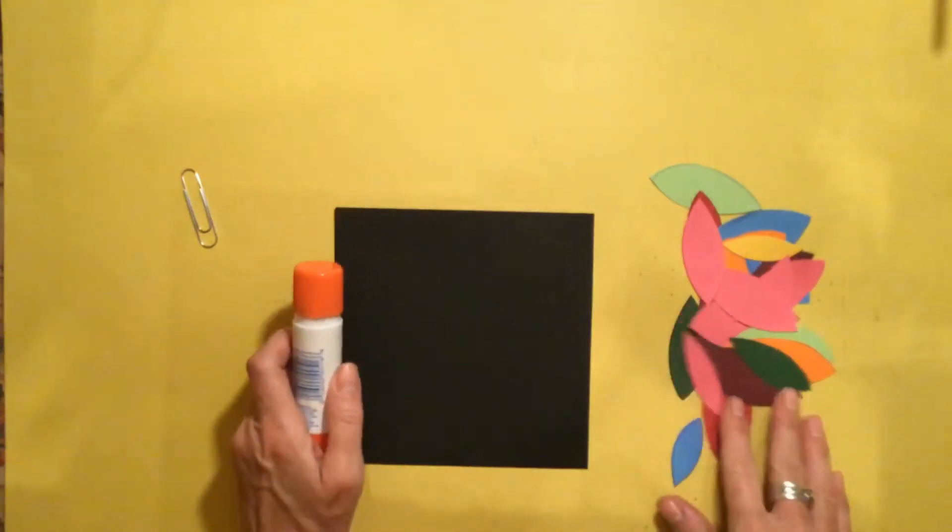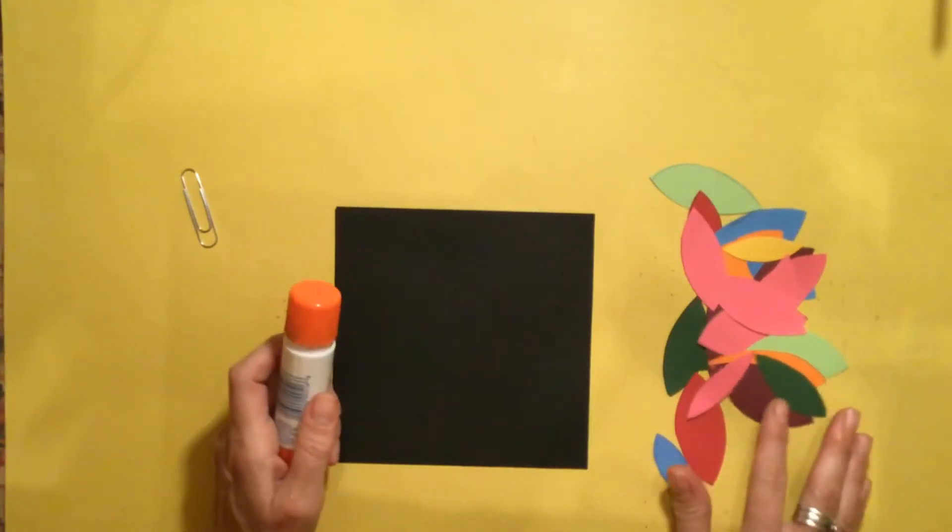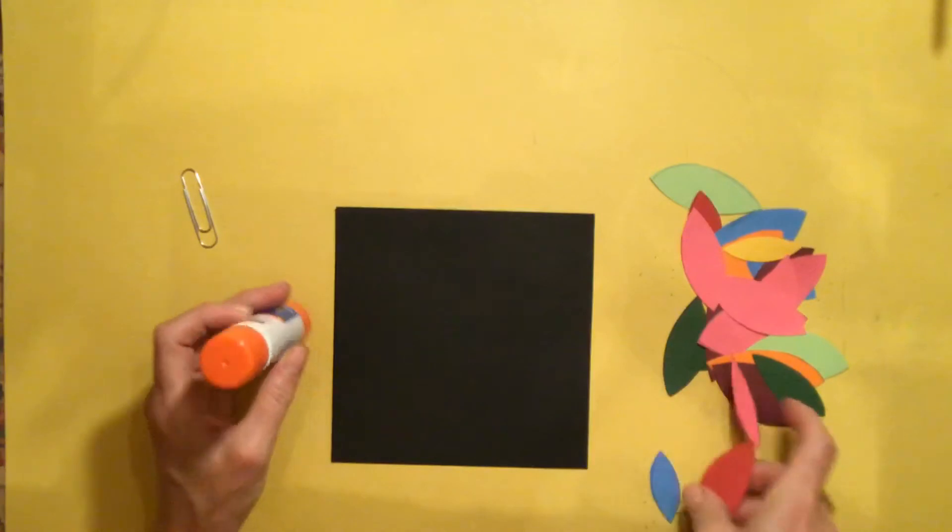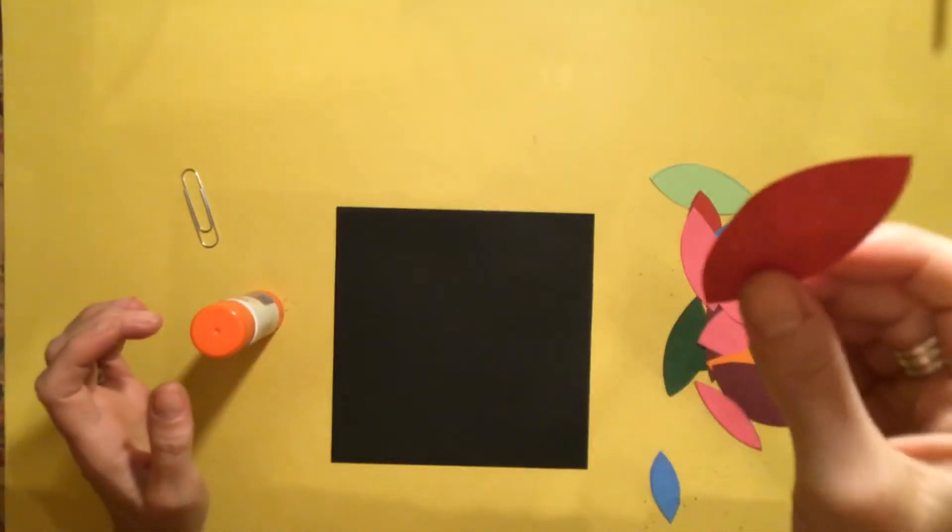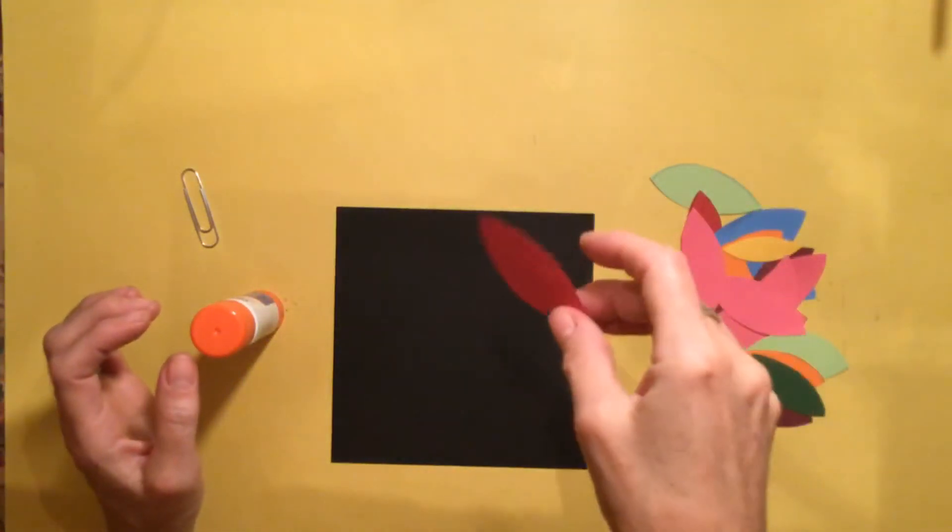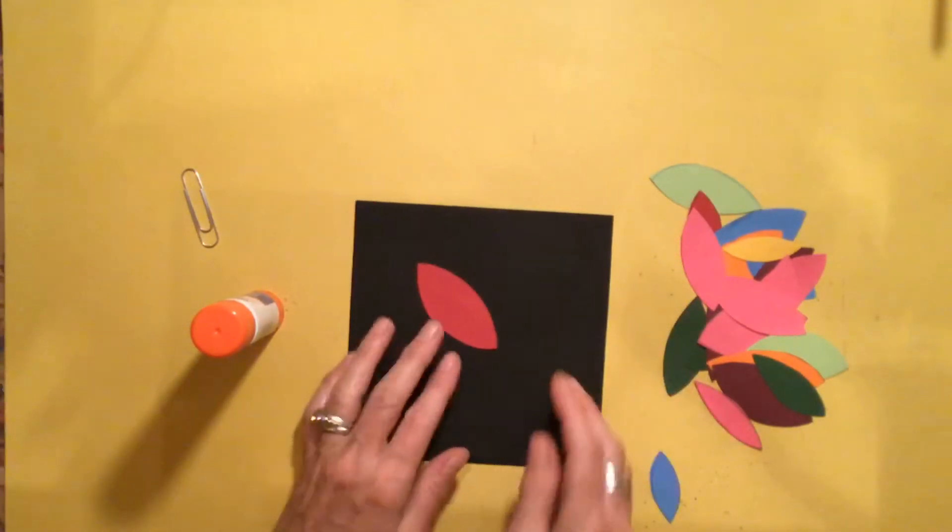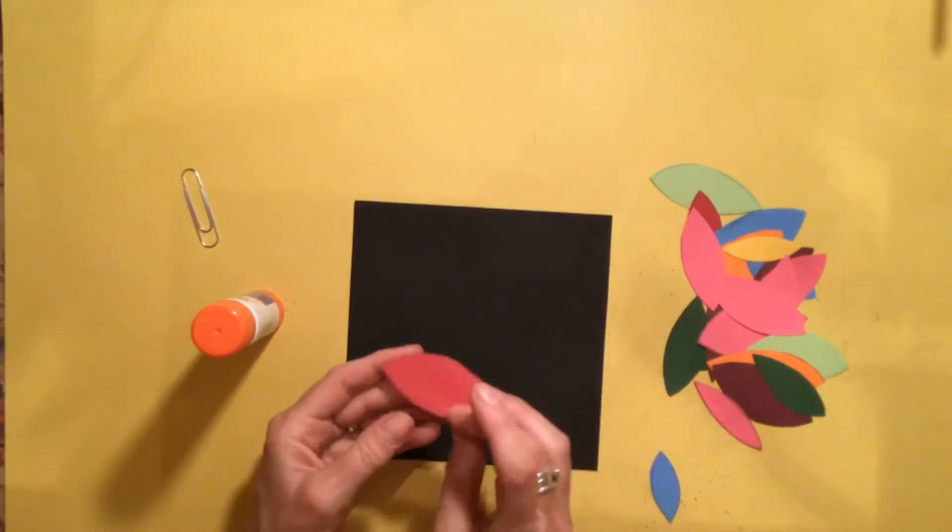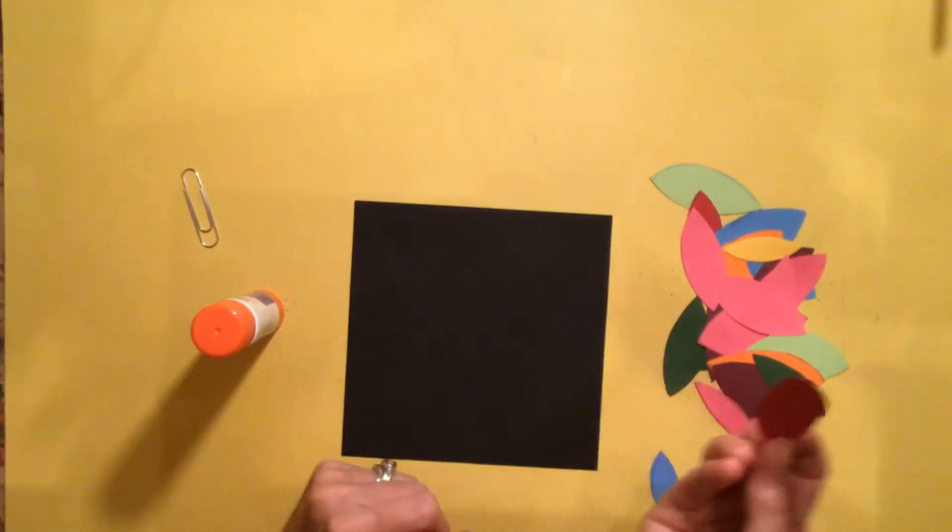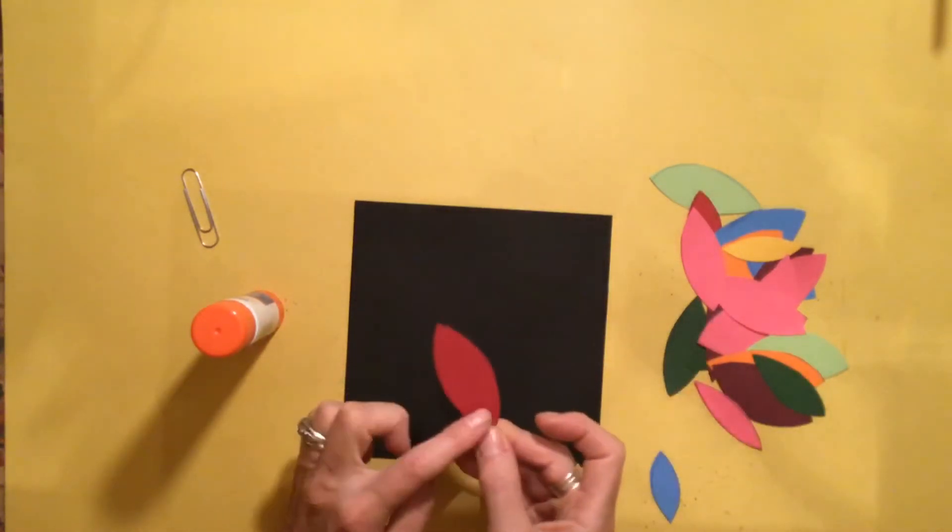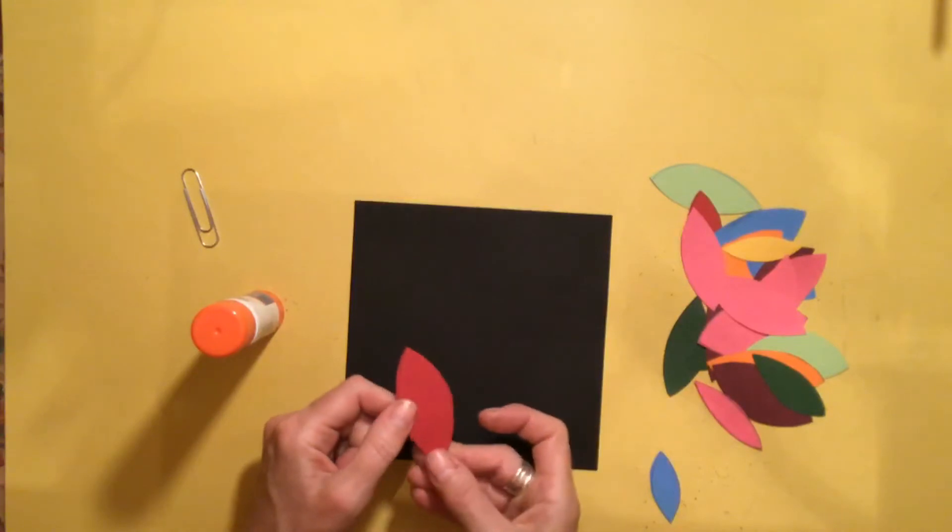And then what you're going to do is pick up one of your leaves and imagine that it is just falling down to the ground and imagine where you want to put it. But before you bring it down, we need to put a little bit of glue on the back of it so that it will stick.